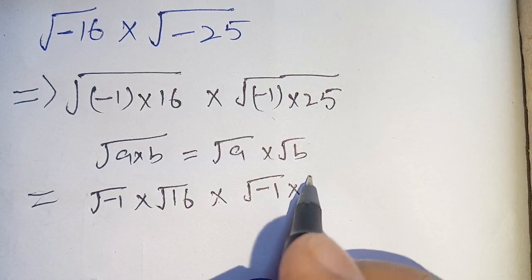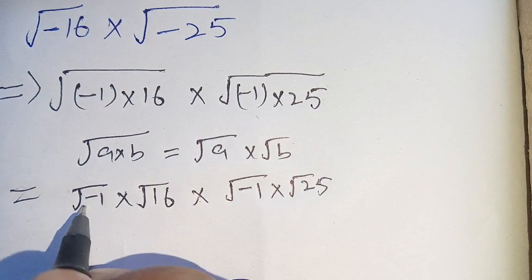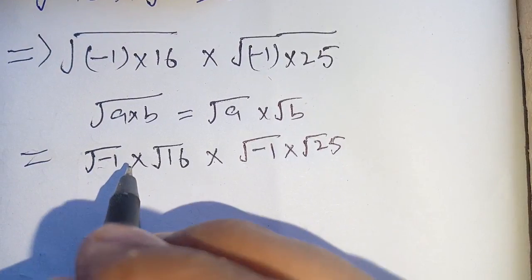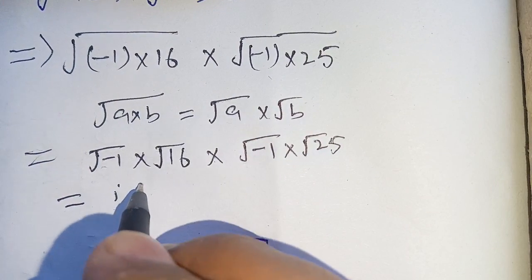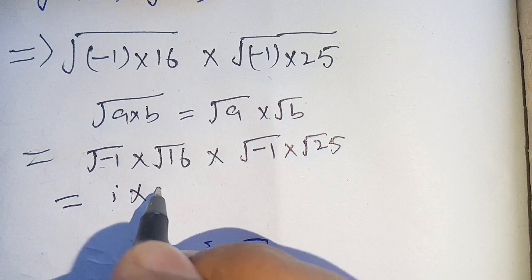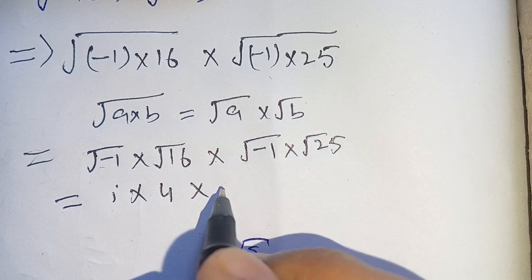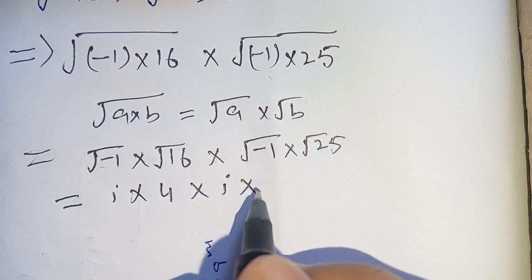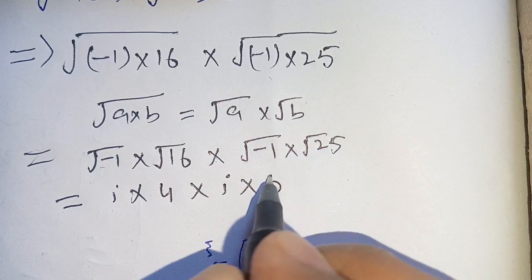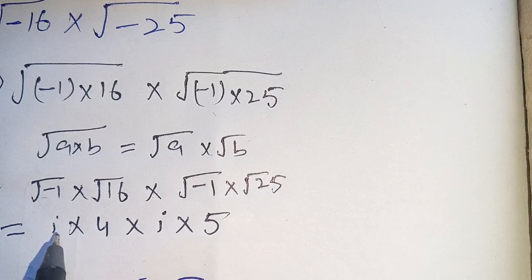We know that square root of minus 1 is equal to iota. So we can write this as iota times square root of 16, which equals 4, times iota times square root of 25, which equals 5.